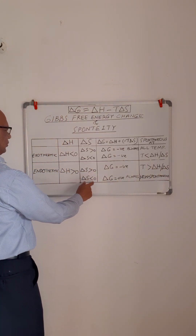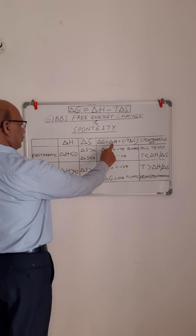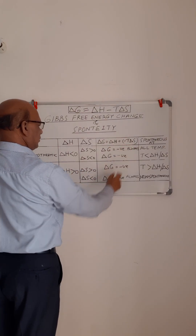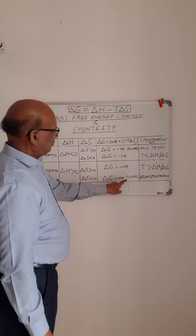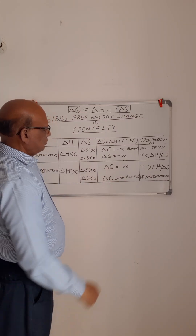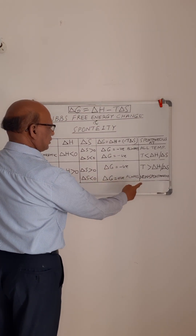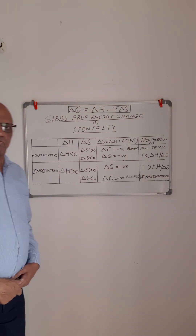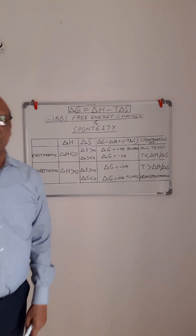The second case for endothermic reactions is when delta S is less than zero. In this case, the first term is positive and the second term is also positive. Both terms being positive, delta G will be positive, so it will be non-spontaneous at all temperatures. This is how we can determine the spontaneity of a given chemical reaction.